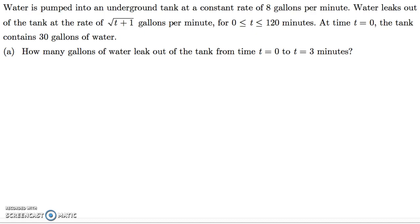So we've got a situation here where water is being pumped into an underground tank at a constant rate of 8 gallons per minute. So that's going to be important. So water is going into this tank the entire time at a constant rate of 8 gallons per minute. However, water is leaking out of the tank at a rate of, well, this function here, square root of t plus 1 gallons per minute.